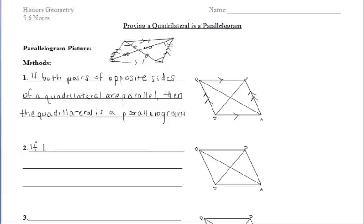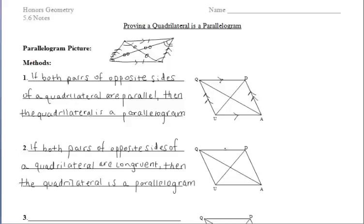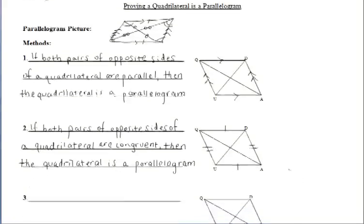The second way says that if both pairs of opposite sides of a quadrilateral are congruent, then the quadrilateral is a parallelogram. This is simply the converse of one of the properties that we know to be true of a parallelogram.